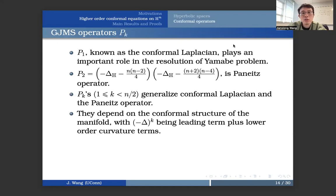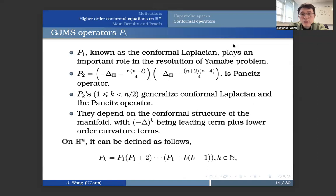So what is the Pk operator? This is actually called the GJMS operator, and it has wider application in differential geometry and conformal geometry. So for k equal to 1, P1 is known as the conformal Laplacian. It has played an important role in the resolution of the Yamabe problem. And when k equal to 2, this is called the Paneitz operator. For general k, when k is between 1 and strictly less than n over 2, they generalize the conformal Laplacian and the Paneitz operator, and they only depend on the conformal structure of the manifold. Particularly, it has minus delta to the kth power being the leading term plus some lower order curvature terms.